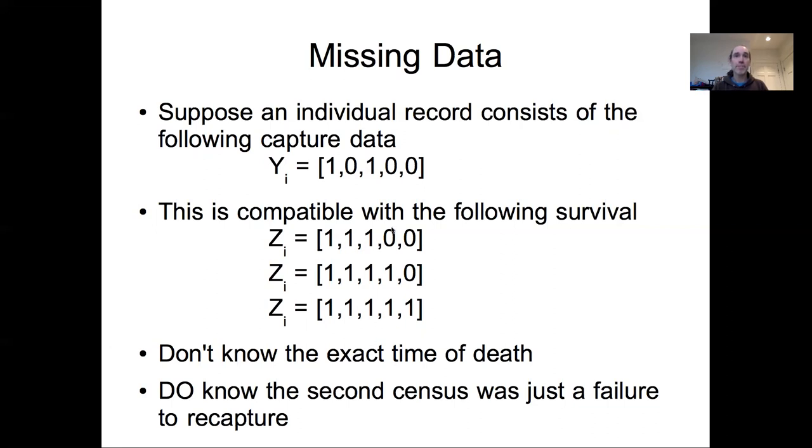If it was alive at one and three, it was alive at two. So we have no uncertainty about states one, two, and three, but state four, the individual could have been dead or it could have been alive. And if it was alive at time four, it could have been alive at time five, or it could have died between times four and five. So the problem is we don't know the exact time of death because we have this convolution of survival and recapture probability.